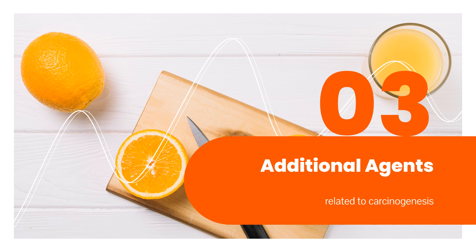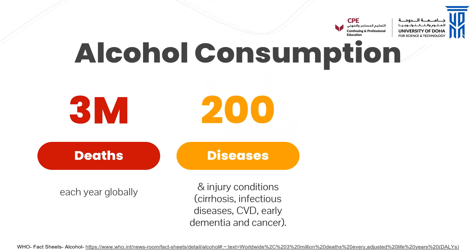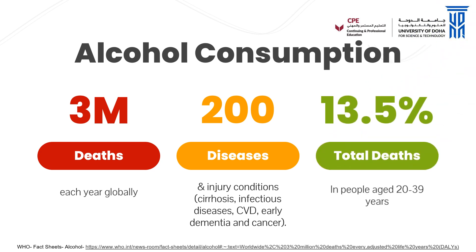There are additional agents linked to carcinogenesis that are not necessarily of immediate dietary origin, but can be impacted by diet. Alcohol consumption is one of them — alcohol consumption was responsible for 3 million deaths a year globally in 2018. There are 200 diseases and injury conditions associated with alcohol consumption, including cirrhosis, infectious diseases, cardiovascular diseases, early dementia, and definitely cancer. 13.5% of total deaths in people aged 20 to 39 years was due to alcohol consumption. So alcohol consumption causes death and disability relatively early in life.